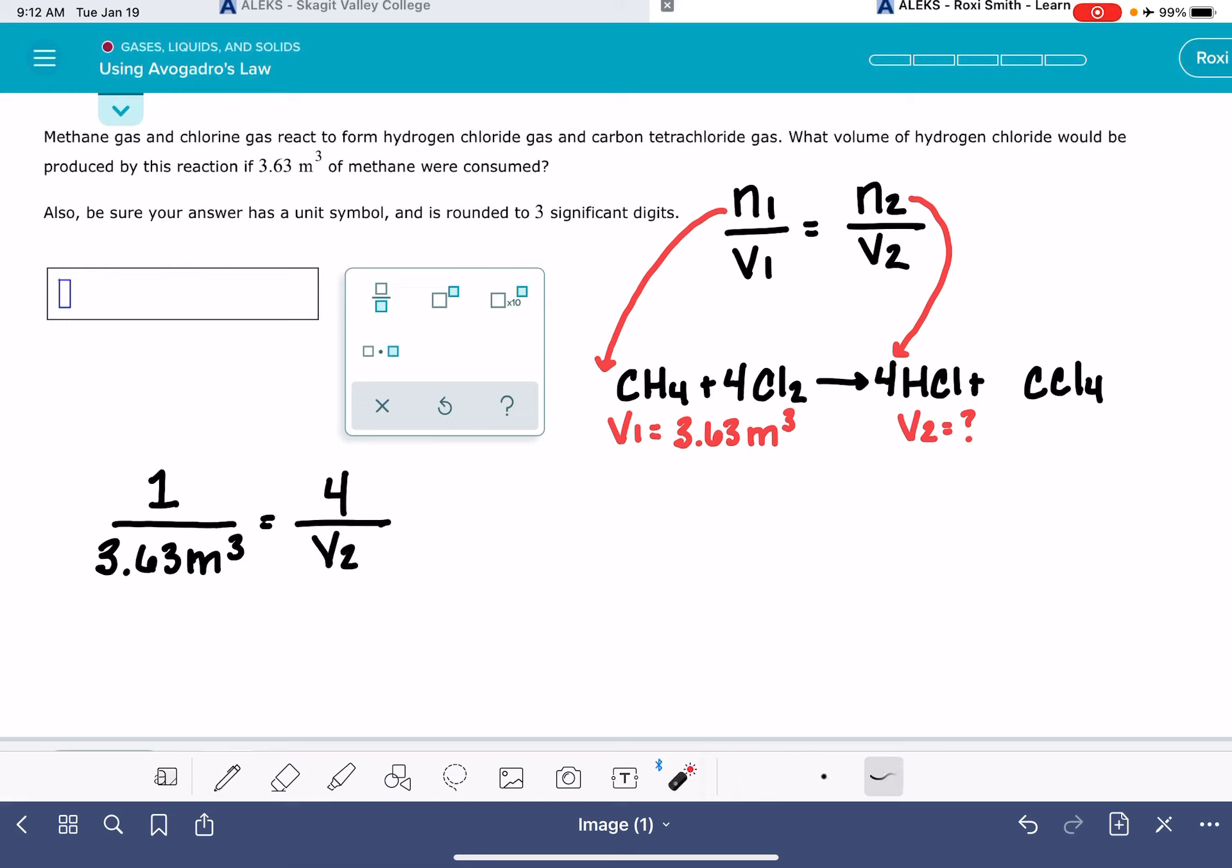So N1 is 1, V1 is 3.63 cubic meters, N2 is 4, and V2 is our unknown. I'm going to rearrange this equation using this mathematical property right here. V2 times 1 is equal to 4 times 3.63 cubic meters. And then we can simply solve for V2.